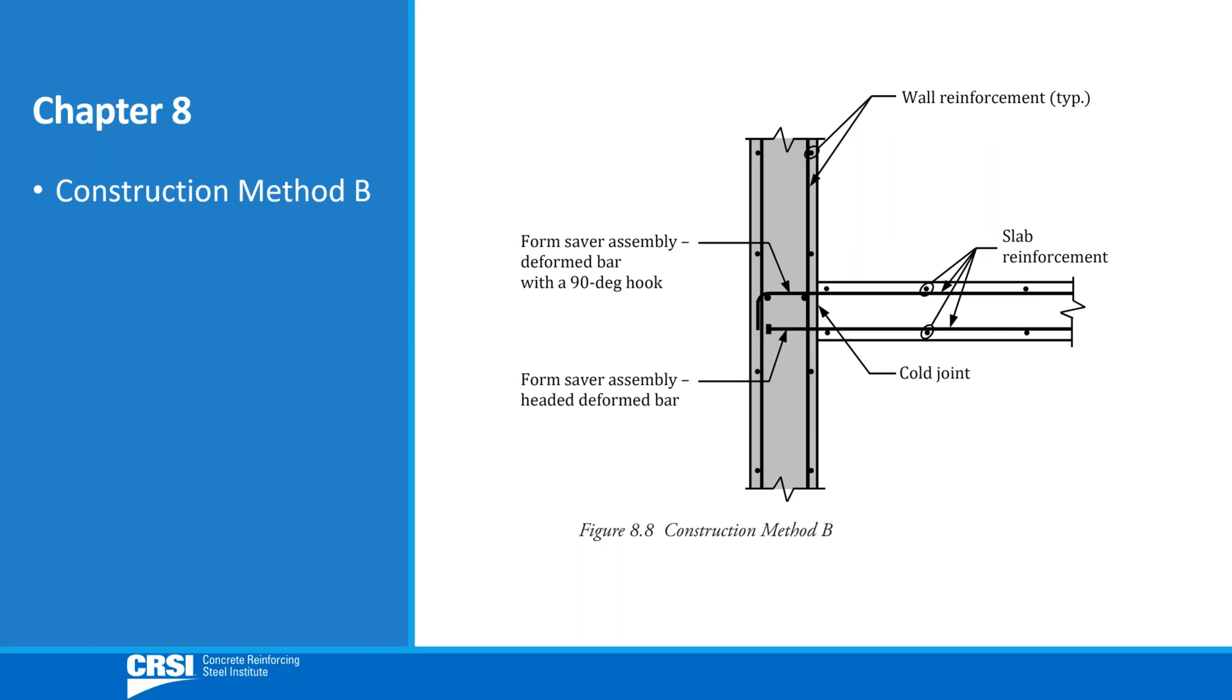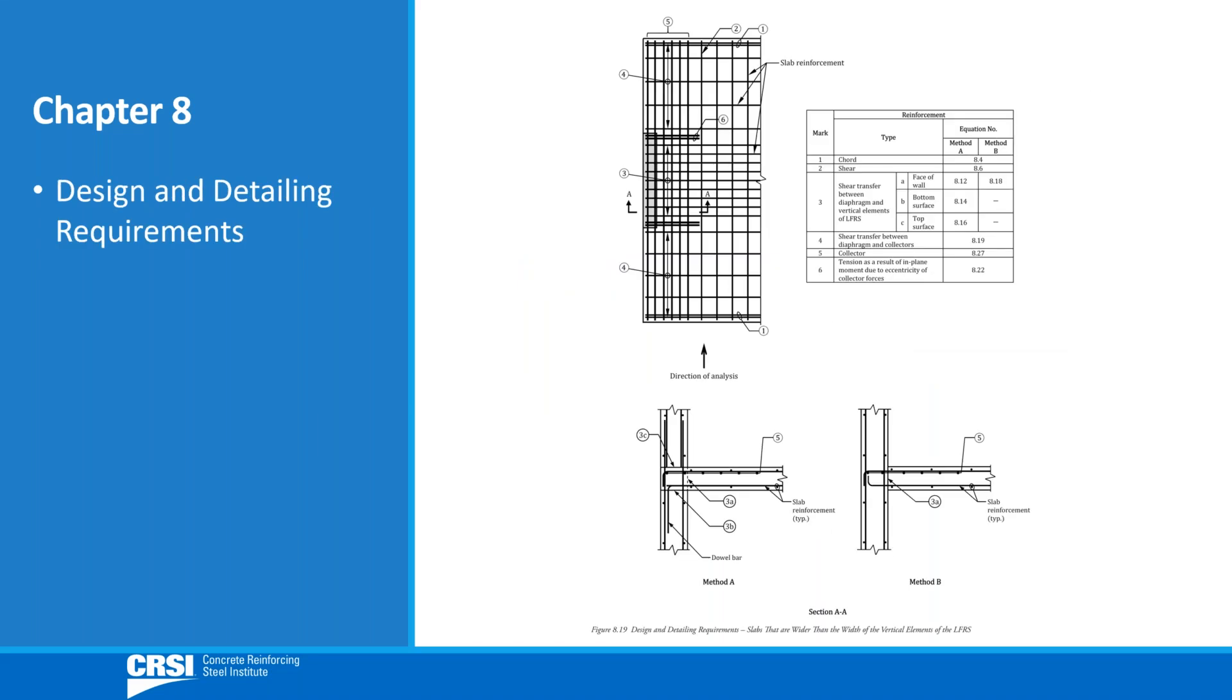Shown here is Method A for the case where the vertical elements of the lateral force resisting system are constructed ahead of the slabs, for example, where slip forms are used to construct a reinforced concrete wall. Comprehensive design and detailing requirements are given for both construction methods.